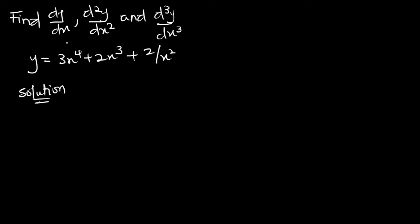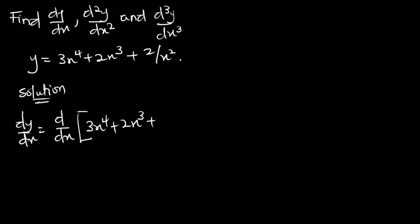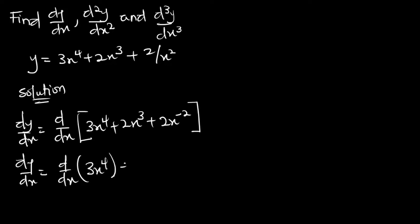So first of all we need to find the first derivative. We have dy/dx equal to d/dx of the function. Let me rewrite this function in a more suitable way, so it becomes 3x⁴ plus 2x³ plus 2x^(−2). Our d/dx will be equal to: we apply d/dx to each of the functions — d/dx of 3x⁴, plus d/dx of 2x³, plus d/dx of 2x^(−2).